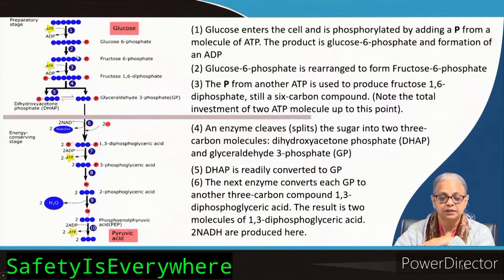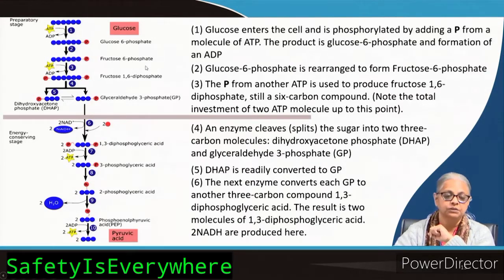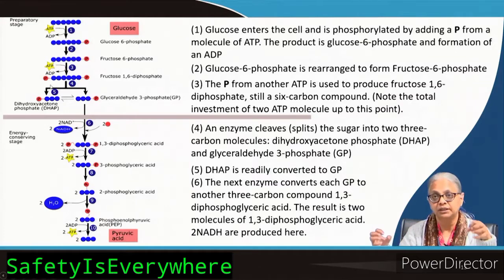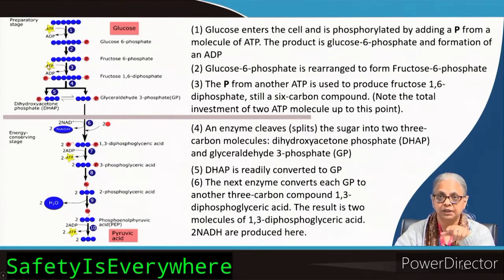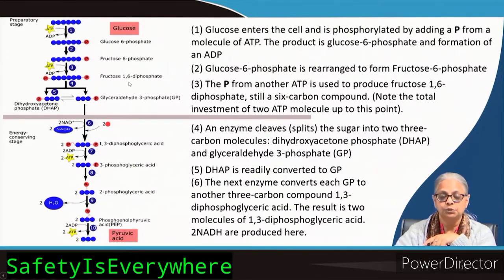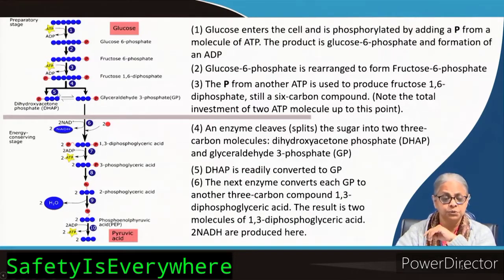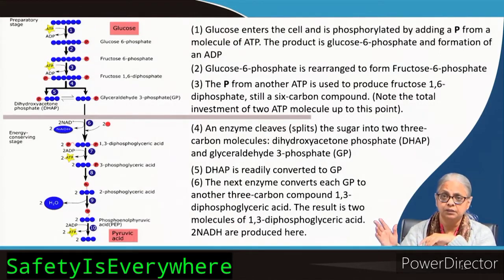Glucose 6-phosphate is then rearranged to the isomeric form fructose 6-phosphate. This fructose 6-phosphate is then converted to a diphosphate — meaning phosphate is attached at both ends of the C6 molecule. One more ATP is utilized and you get fructose 1,6-diphosphate.